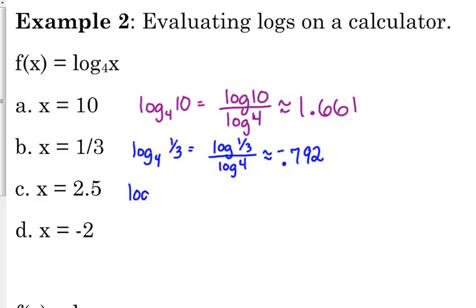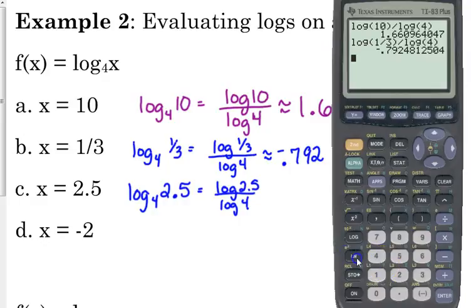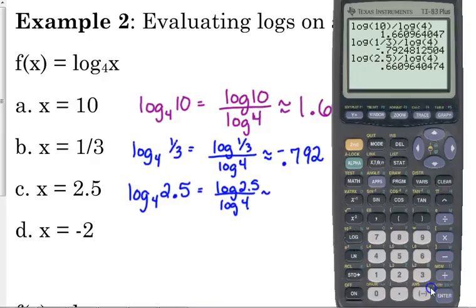2.5, log base 4 of 2.5, log of 2.5 divided by log of 4. So the log base 4 of 1 third is approximately negative 0.792.